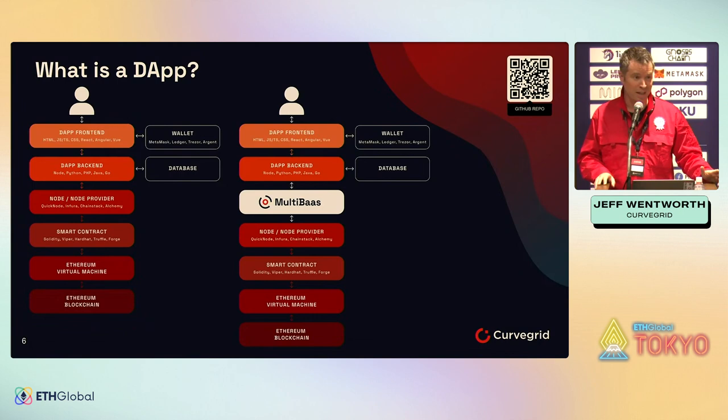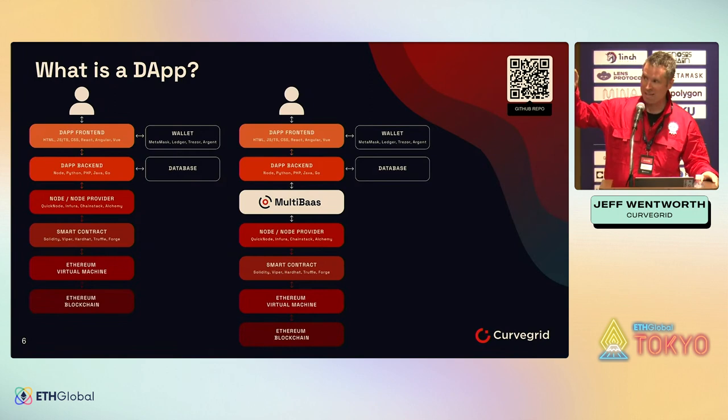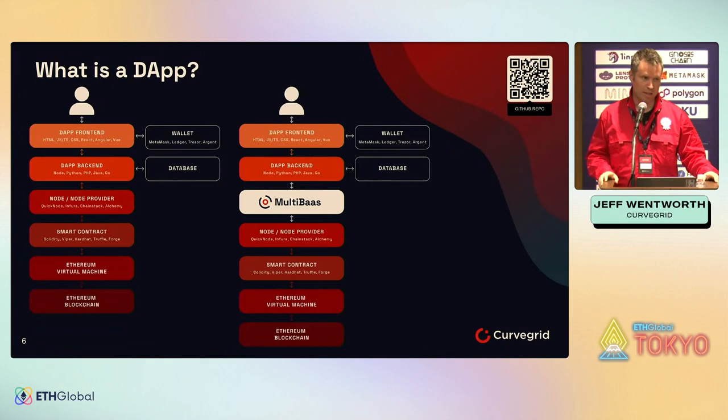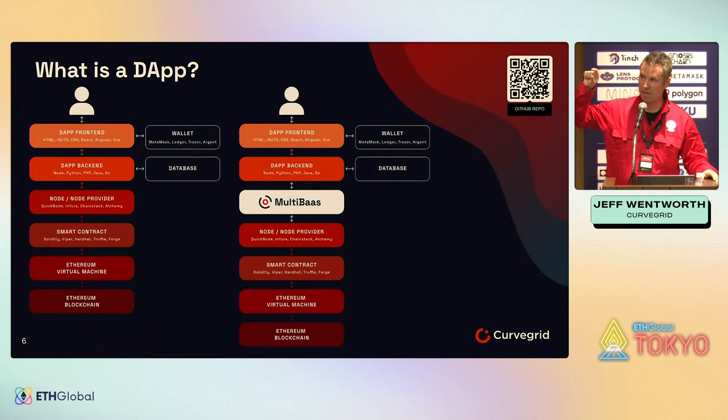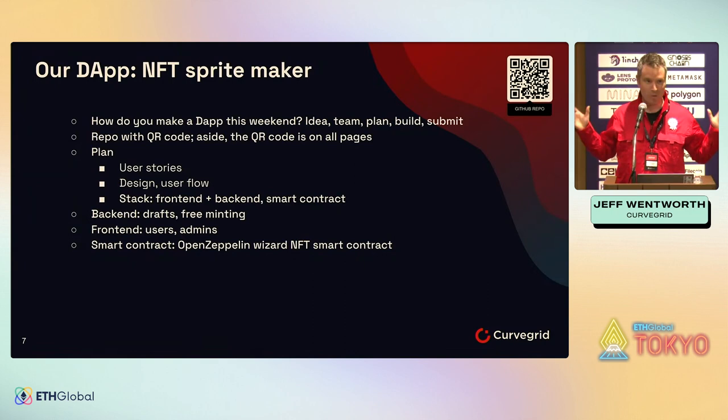In the mix you also have a wallet — whether custodial or non-custodial — and a database. Where MultiBaaS sits in this stack and makes things easier is typically between your DAP front end and back end and your smart contracts. The idea is that you actually have to build less on the front end or back end, and less of the core infrastructure — we take care of a lot of that for you. That's what MultiBaaS provides.